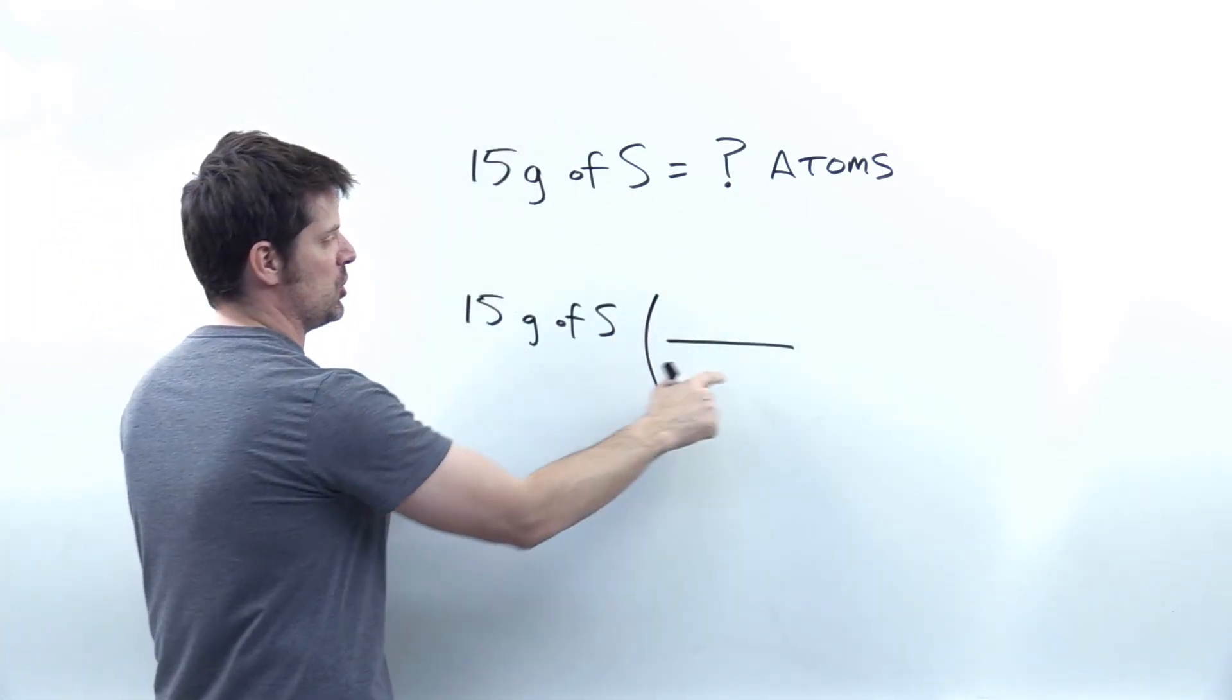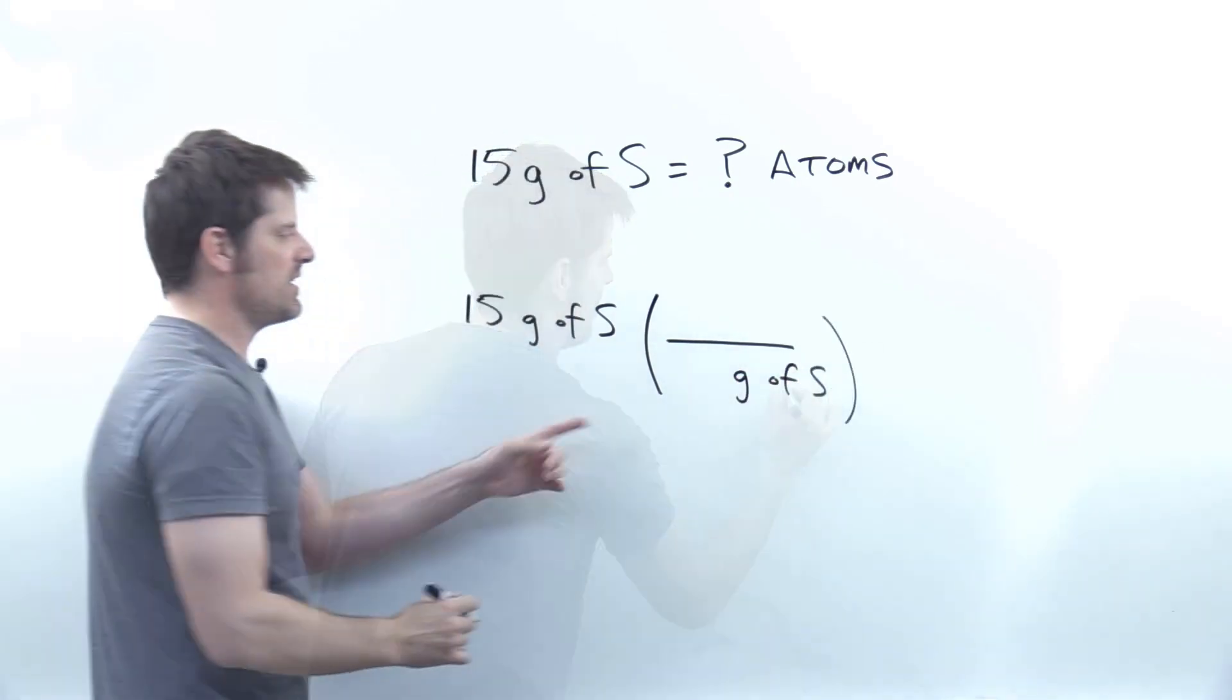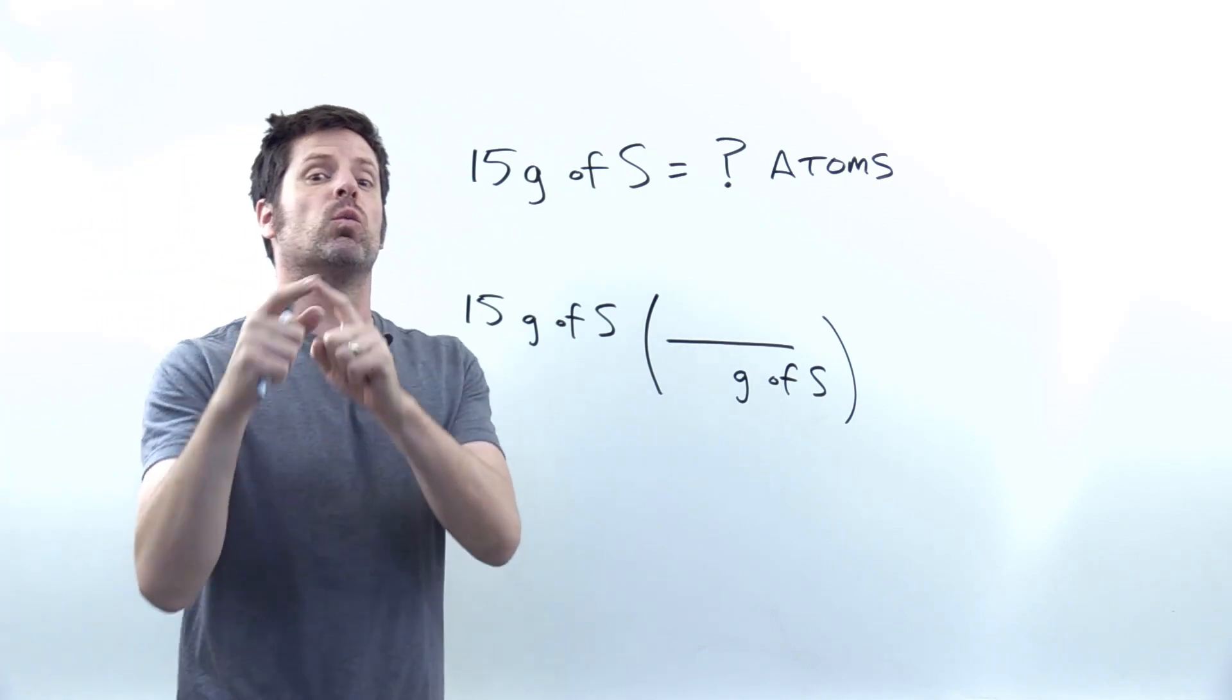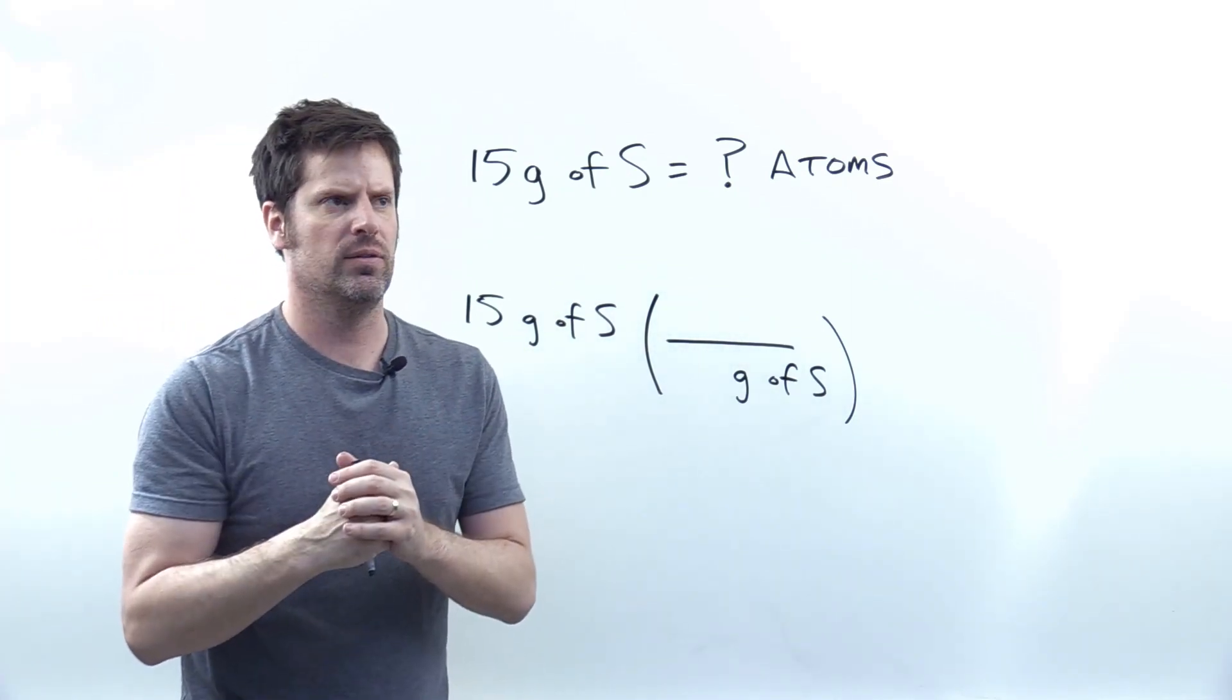In our first set, our units should be grams of sulfur in the denominator to cancel out grams of sulfur units in the numerator of the previous term. Now, what can I relate grams of sulfur to unit-wise?